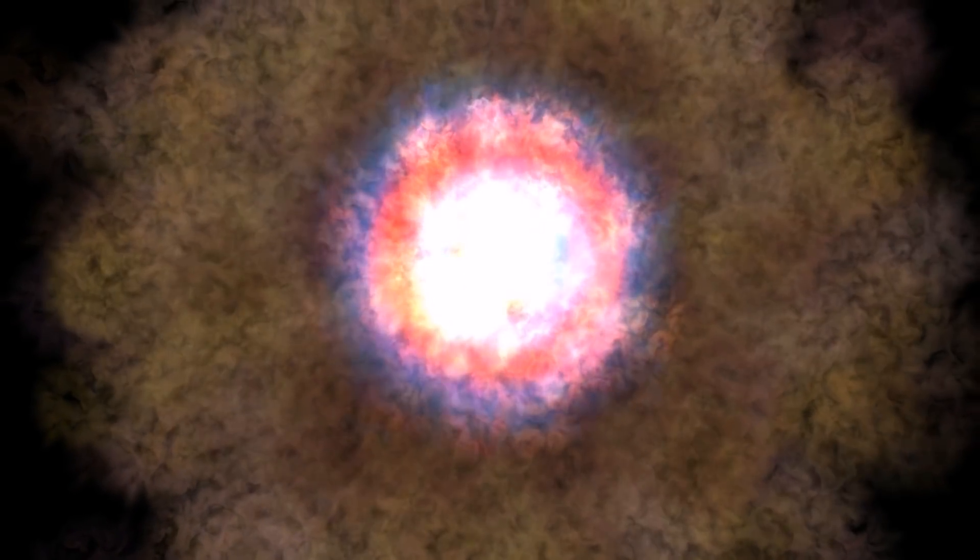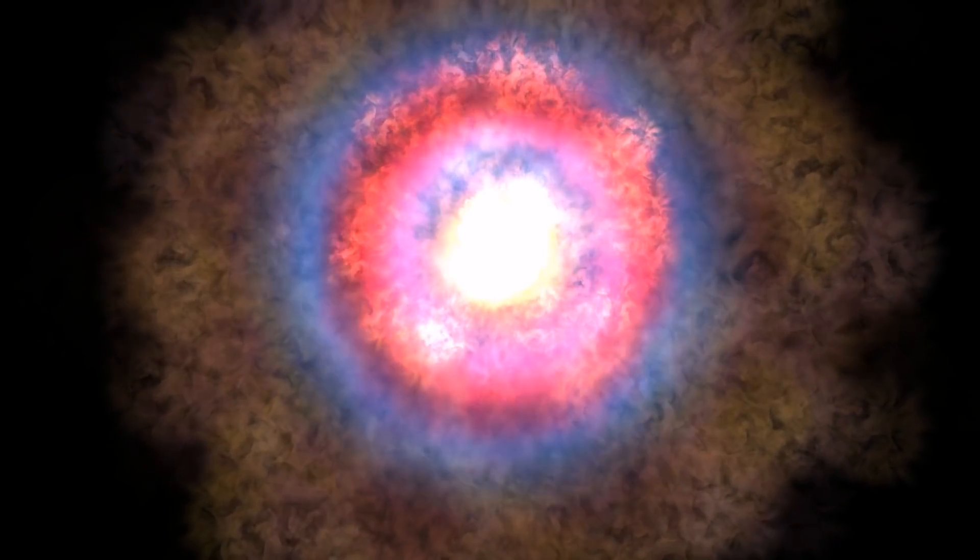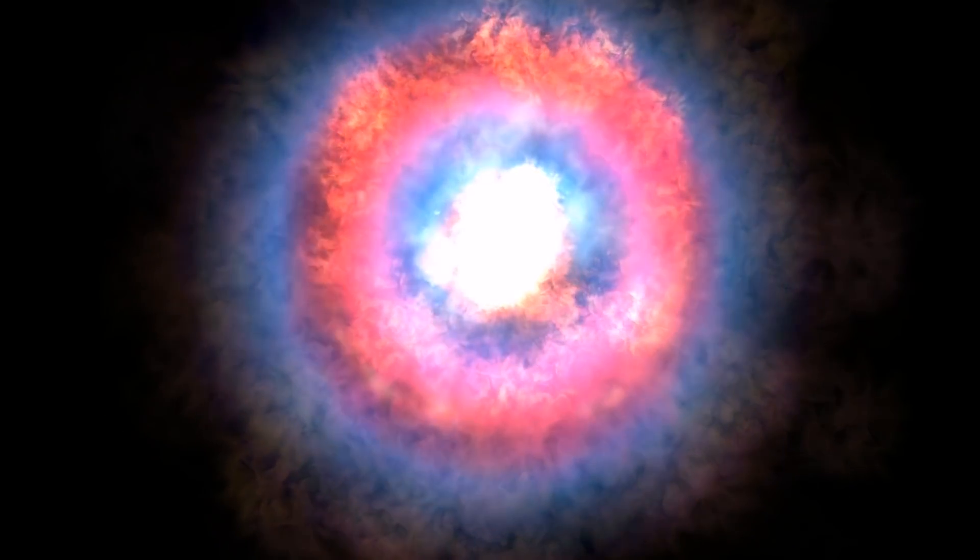We know that when a star collapses, resulting in a supernova, it creates new elements depending on the type of supernova that occurred. The products of a supernova can be oxygen, helium, nickel, iron, and many more.